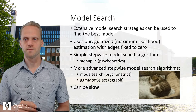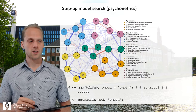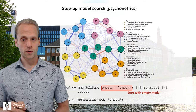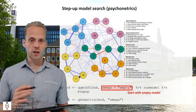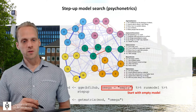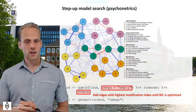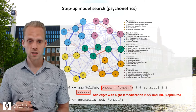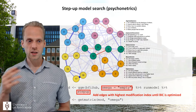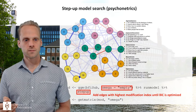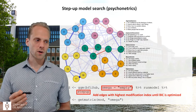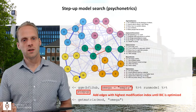Let's look at the step-up model search in psychonetrics, which we can do with the step-up function. First, we can specify omega to be empty. By default, your network in psychonetrics will be fully connected with all edges included. But if we say omega equals empty, we start with an empty model instead. Then we use the step-up function to add edges with the best modification index until the BIC is no longer improved. This is a very exploratory tool — it uses modification indices, which have a bit of a bad reputation in SEM.